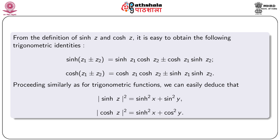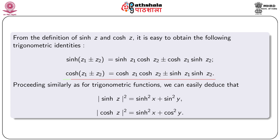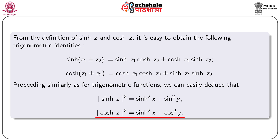We prove some hyperbolic identities using the definitions of sinh z and cosh z: sinh(z₁ ± z₂) = sinh z₁ cosh z₂ ± cosh z₁ sinh z₂ and cosh(z₁ ± z₂) = cosh z₁ cosh z₂ ± sinh z₁ sinh z₂. Proceeding similarly, we can show that |sinh z|² = sinh²x + sin²y and |cosh z|² = sinh²x + cos²y.